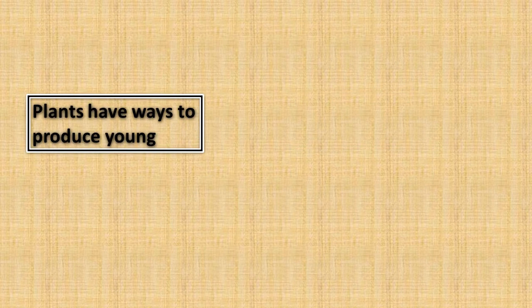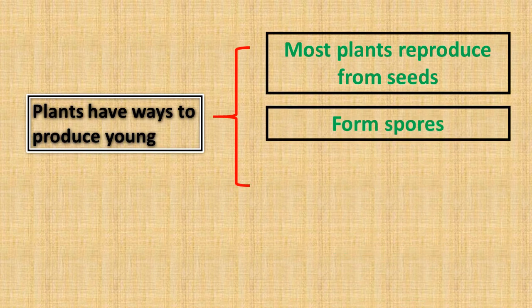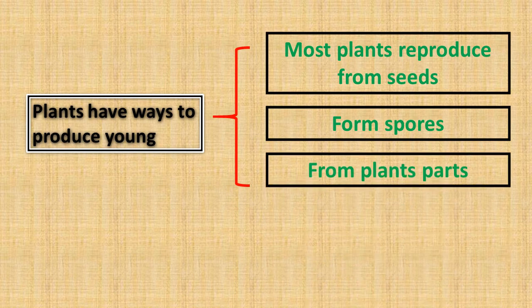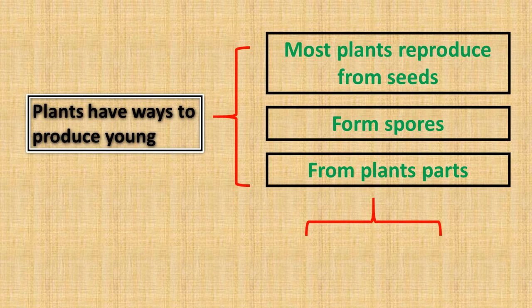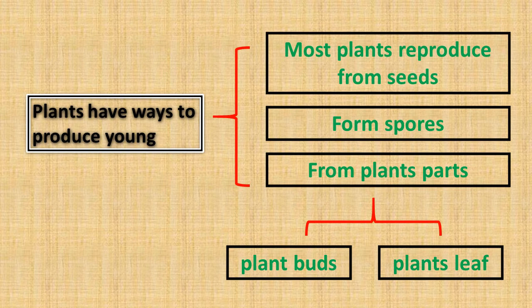Plants have ways to produce young. Most plants reproduce from seeds, from spores, or from plant parts. Plant parts are divided into plant buds and plant leaves.